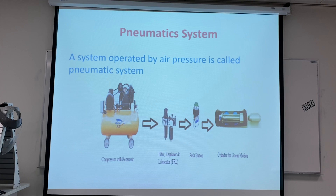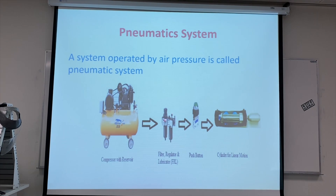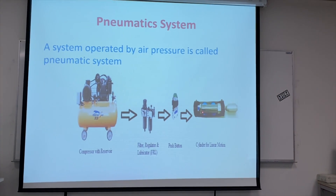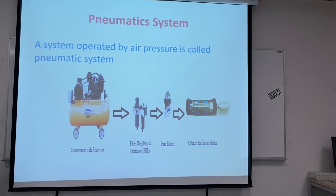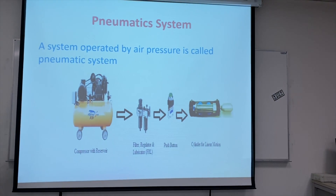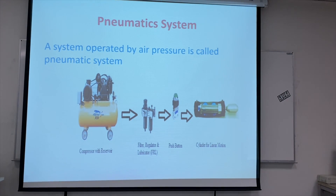We are going to discuss the pneumatic system in this lab — how it works and what components we use. We can see a compressor here; compressed air passes through the air service unit, then through a push button valve, and then goes to the cylinder, producing mechanical motion. Pneumatics is essentially highly compressed air — a branch of technology that deals with the study and application of pressurized gas to effect mechanical motion.